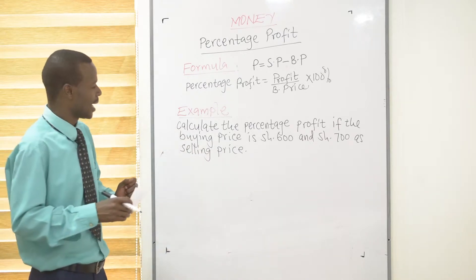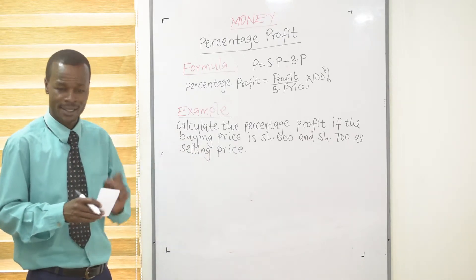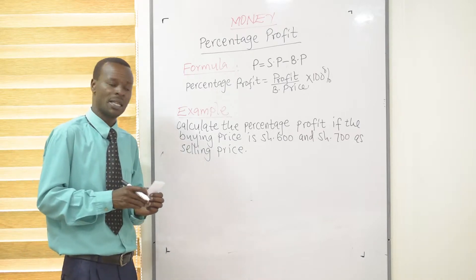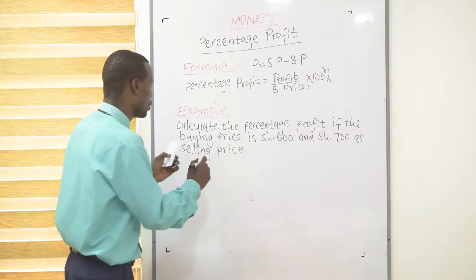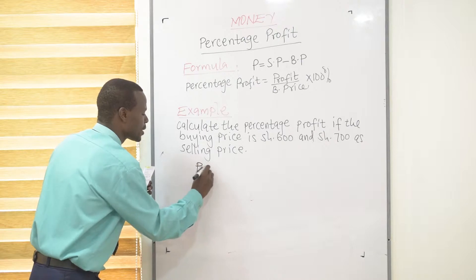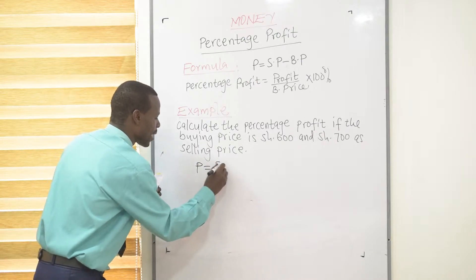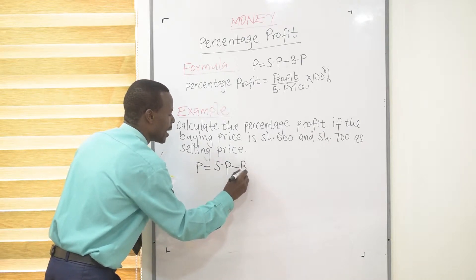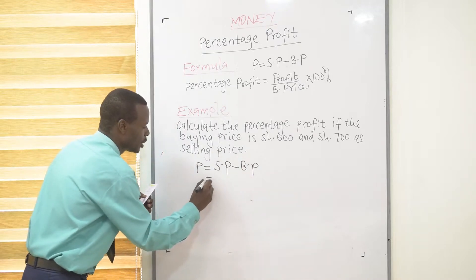Now, to get our percentage profit, first let's work out the profit itself. How do we get the profit? Profit, as we've said, is obtained by selling price, take away buying price.